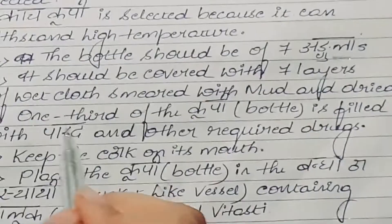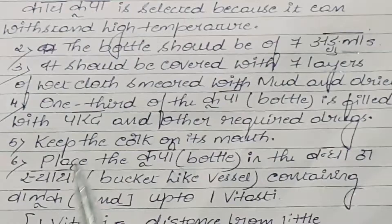Then one-third of the kachakupi is filled with parada and other required drugs. Keep the cork on its mouth. Then place the kupi in the bandha or stai, that is a bucket-like vessel containing valuka sand up to one vitasthi.